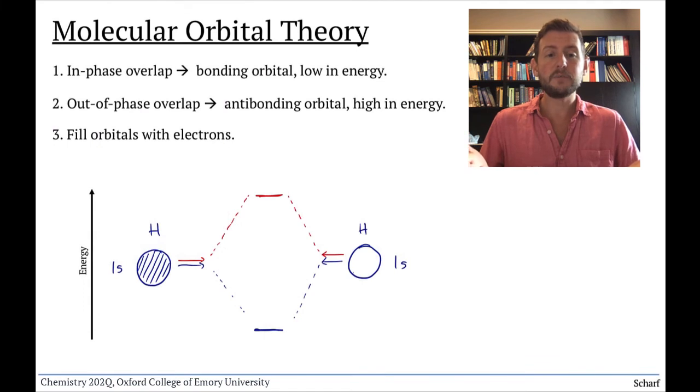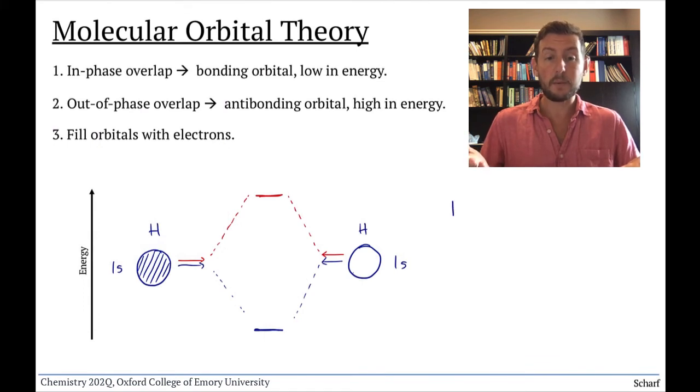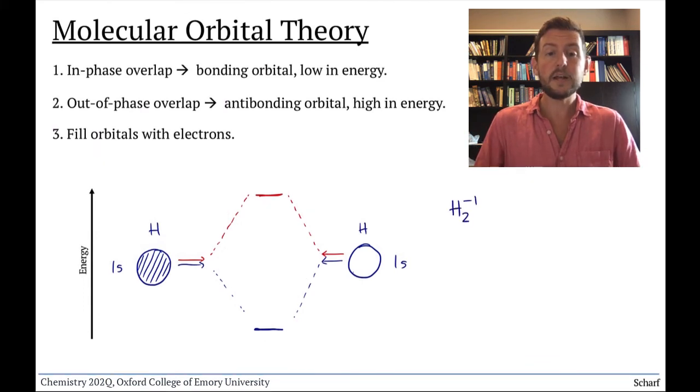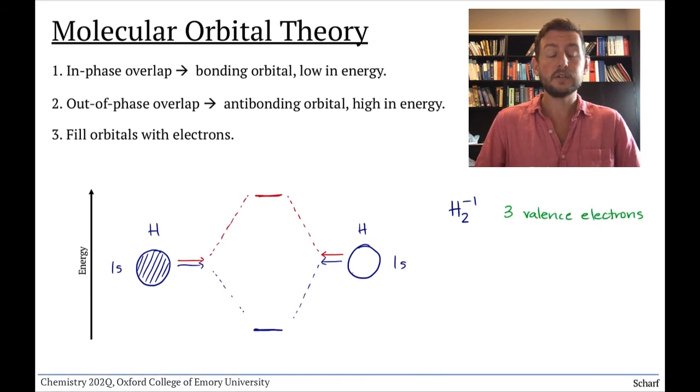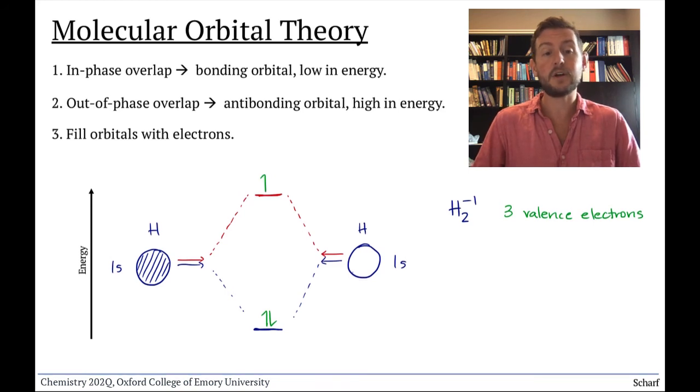How would this MO diagram change for the H2 1 minus ion? We'd have three total electrons to fill the molecular orbitals. So, two would go in the bonding orbital, and the third would have to go in the antibonding orbital.